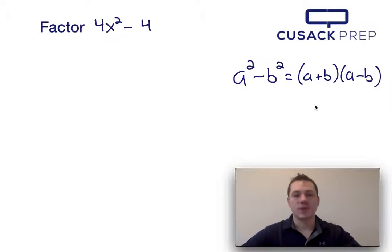Now, if I factor 4x squared minus 4, that means that a squared must be 4x squared, and b squared must be 4.